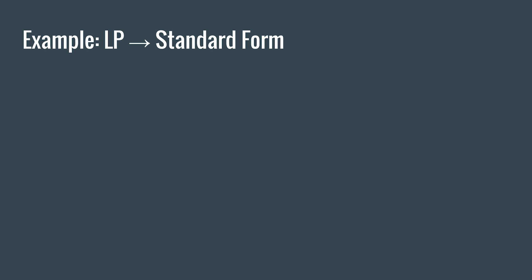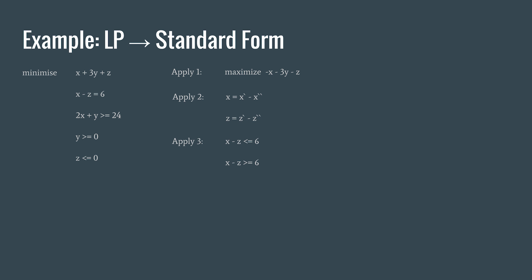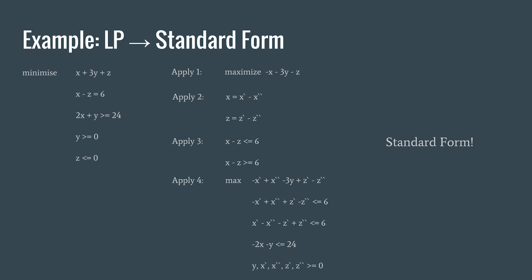Now we'll do a quick example of converting a linear program to standard form. Given this linear program, first we can see it's a minimize, so we apply rule one — we change it to a maximize and multiply by minus one. Then we apply rule two: x and z don't have non-negative constraints, so we give them non-negative constraints. Rule three: we have the equality x minus z equals six, so we replace it with two inequalities. Rule four: we bring it all together, ensuring the constant is on one side and greater than or equal to the rest of the function. We now have our linear program in standard form.